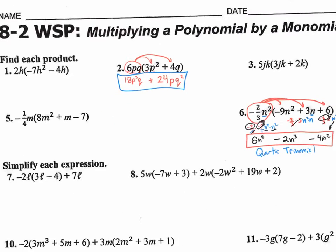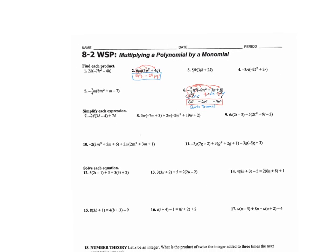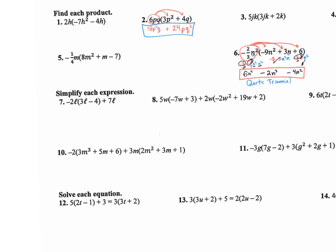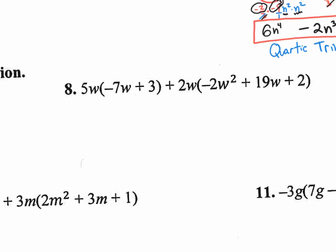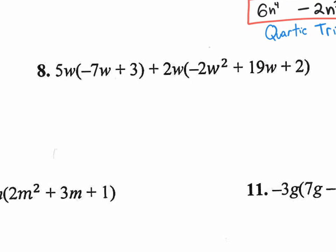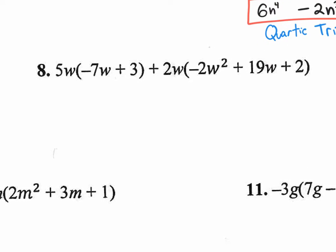Let's look at this next section. The first section is just distributed property. The next section is distributed property and combining like terms. These are pretty fun. Right? Look at that. It's beautiful.